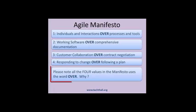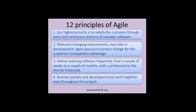In all the values in the manifesto, we can see the word 'over.' The word 'over' is cautiously used to emphasize that what is on the right is not a bad practice. However, the Agile process gives more importance to what is on the left.